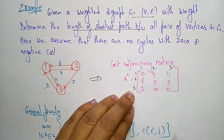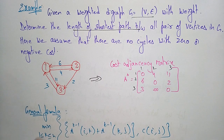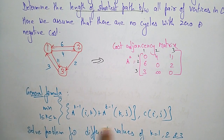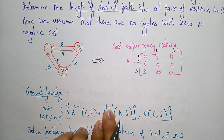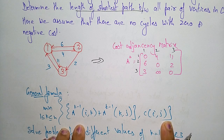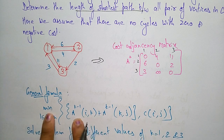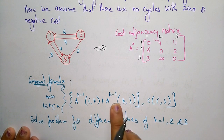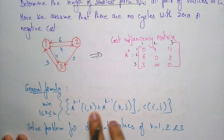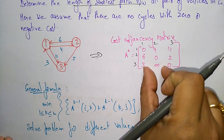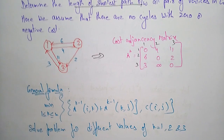With the help of this adjacency matrix we have to find the next adjacency matrix. The general formula, already explained in the previous video, is: A^K[i,j] = min(A^(K-1)[i,K] + A^(K-1)[K,j], C[i,j]). From these two values we take the minimum. We solve the problem for different values of K: 1, 2, and 3, since there are three vertices.